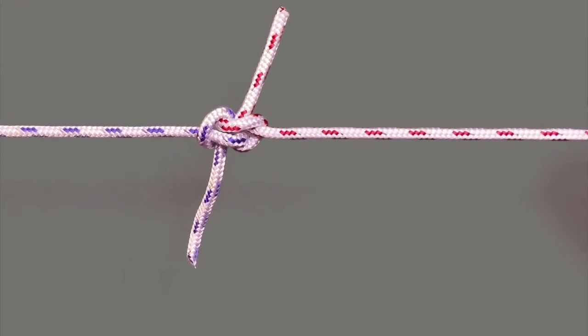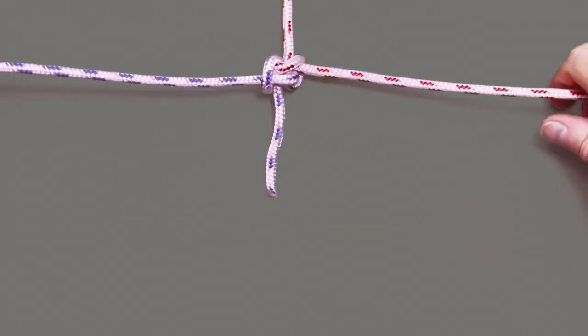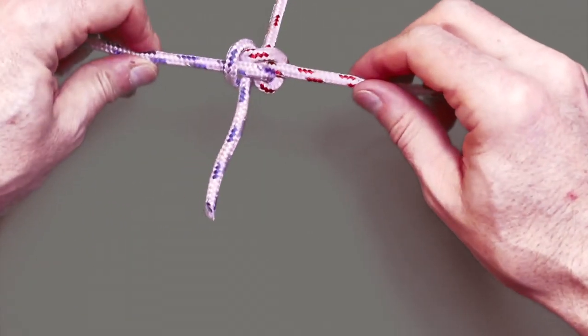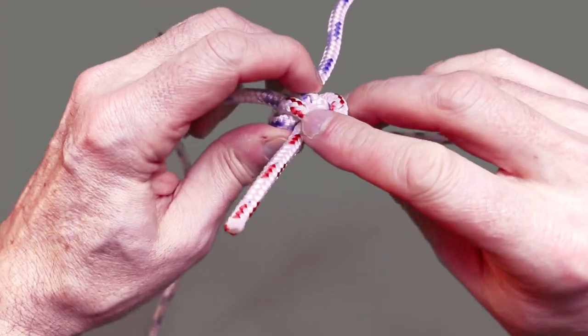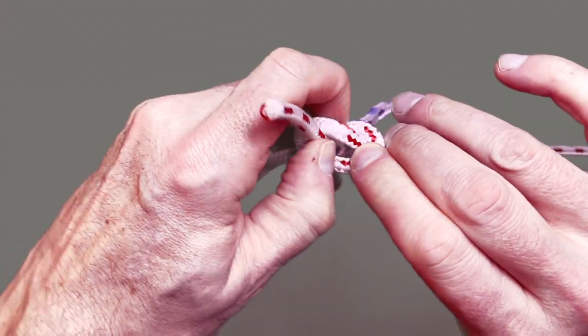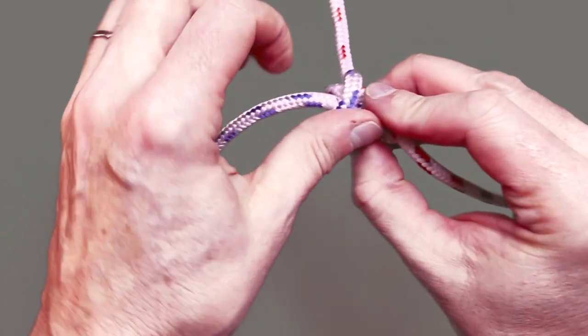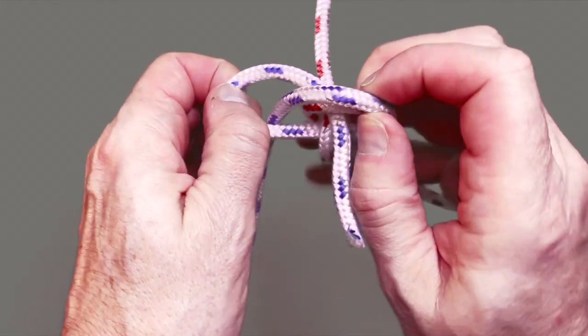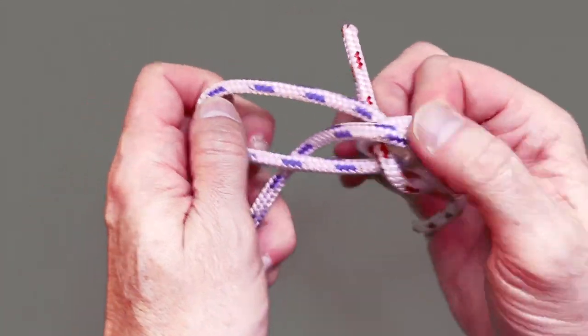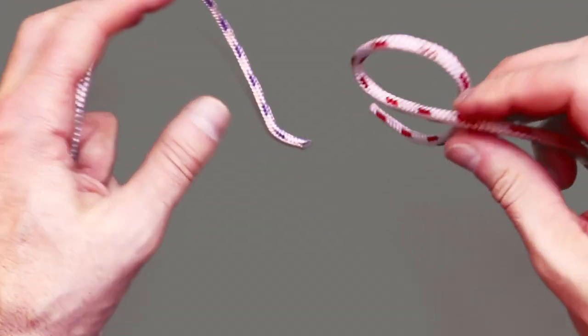The zeppelin knot is great for joining ropes of equal diameter and has the added advantage over other knots and bends that it's easy to undo by teasing apart the two loops. The knot simply separates even after extreme load has been applied.